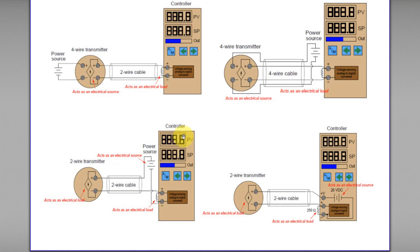How about this one? Again, this controller acts as an electrical load, judging by the positive and negative terminal here. Because the controller acts as an electrical load, the transmitter has to act as an electrical source. However, this is a two-wire transmitter instead of a four-wire transmitter. The transmitter does not have the ability to power up the loop, so it must be powered from an external power source. To solve this problem, this two-wire transmitter is externally connected to an external power source. This external power source is connected in series with the transmitter and the controller, so the power source here will power up both the transmitter and the controller.